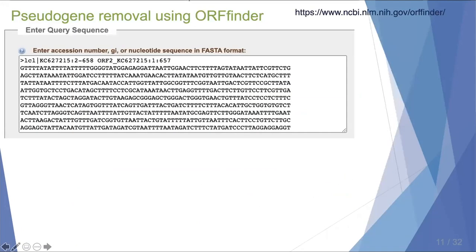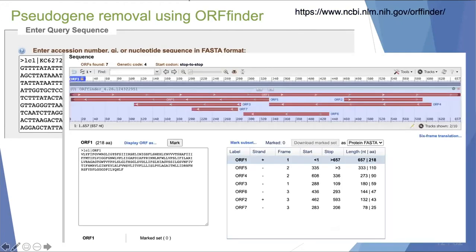We do this with two different methods. The first method uses a program called ORFFinder. ORF stands for open reading frame. This program takes a CO1 gene sequence and translates it into every possible open reading frame. The only one we're interested in is the longest one, highlighted at the top, and we record the length of that open reading frame.